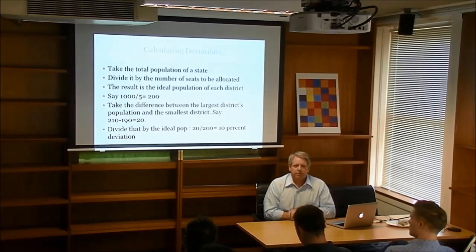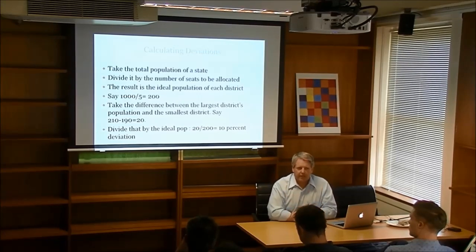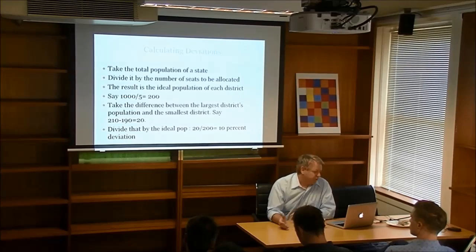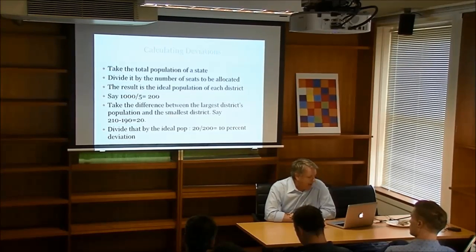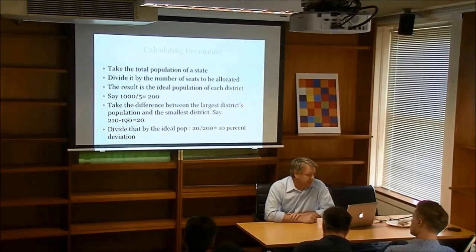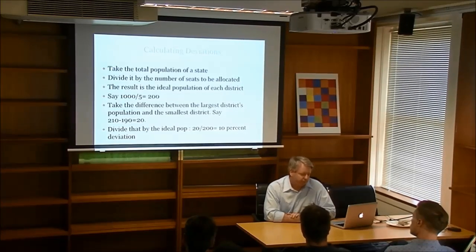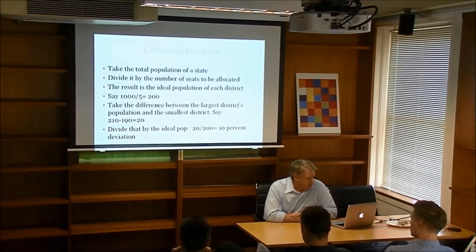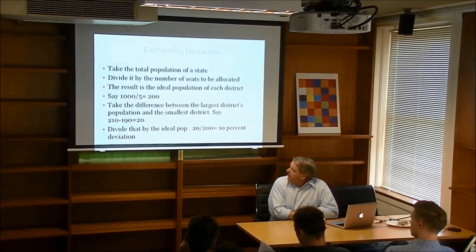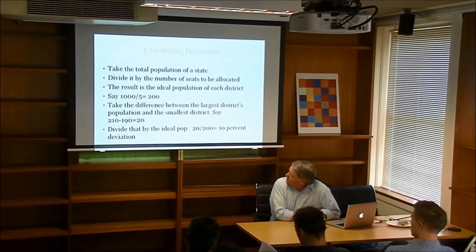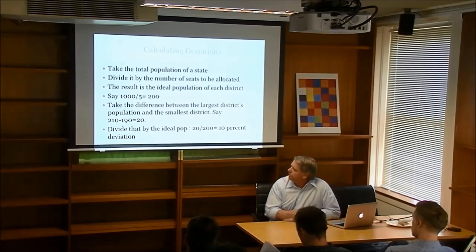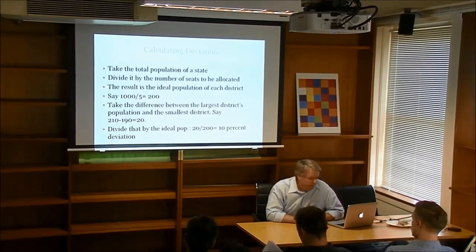Population deviations are quite simple. You take the total population of the state, divide by the total number of districts, and get the ideal population. So if you have a thousand people in a state drawn into five districts, the ideal population is 200 people per district. To calculate the total range, you take the difference between the largest and smallest district — 210 and 190 in this example — and get a percentage deviation by dividing that range by the ideal population. In this case, there's a 10% total deviation.